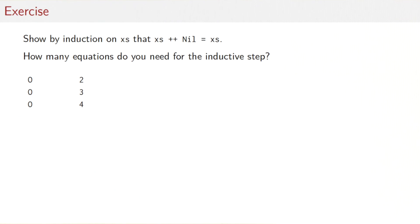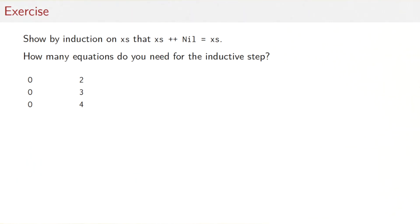Let's do an exercise. Let's look at the second law for concat, namely that nil is a right unit for Xs. Can you show by induction that that law holds? And how many equations do you need for the inductive step — two, three, or four?